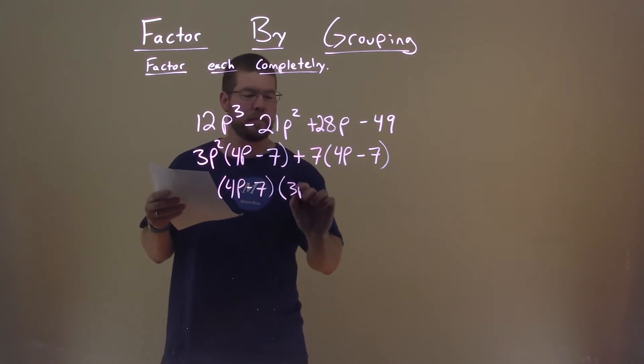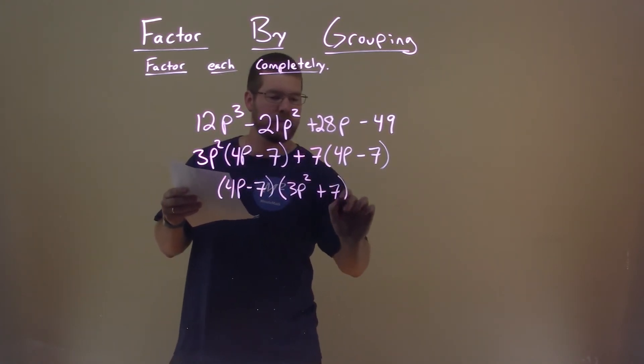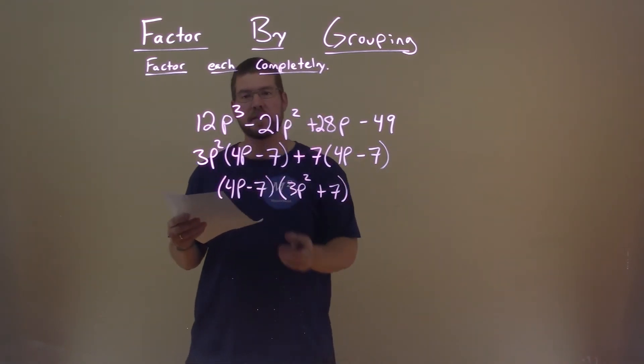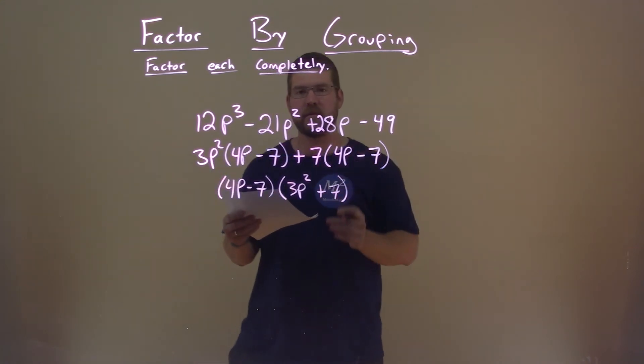The 3p squared plus 7. And there, actually, we have our final answer: 4p minus 7 times 3p squared plus 7.